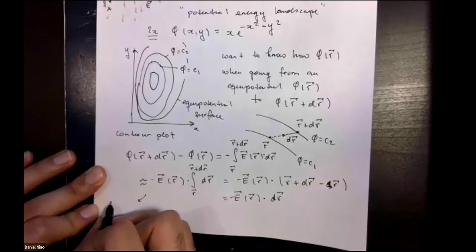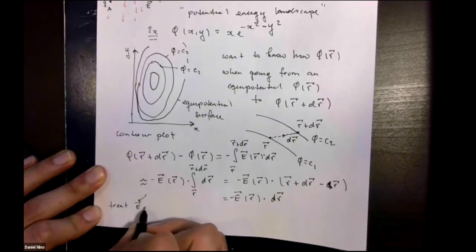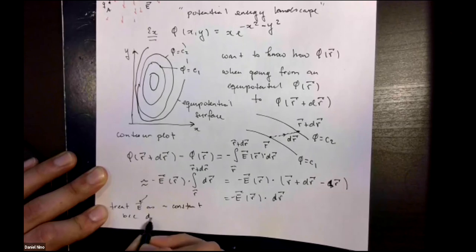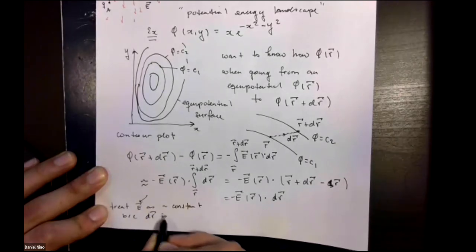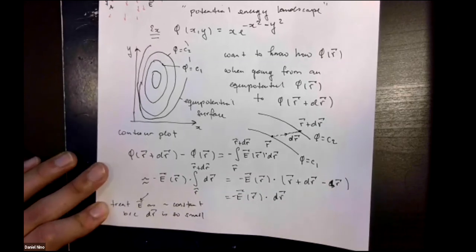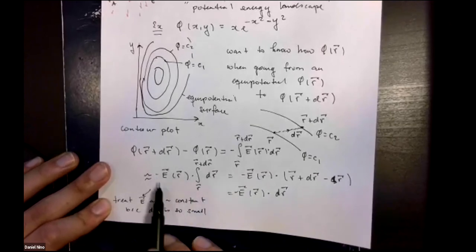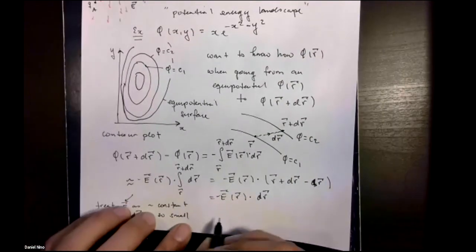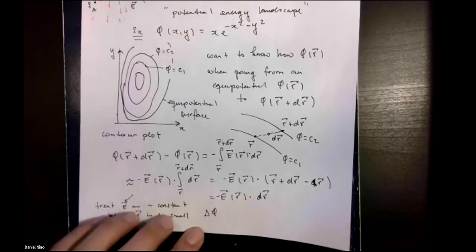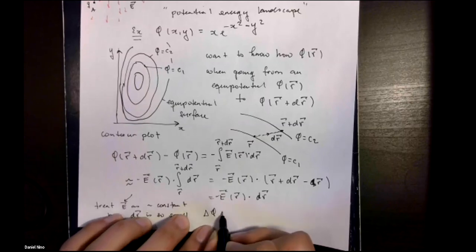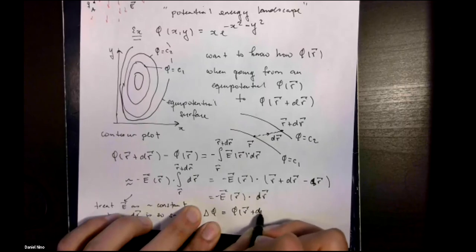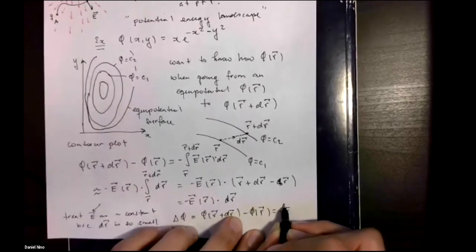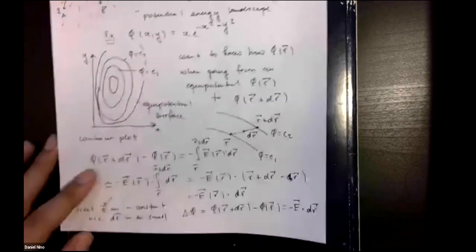So as a reminder, we treated E as approximately constant because our difference in path is so small. We're approximating E as not having changed appreciably over the range of integration. So what we're left with is our change in potential energy per unit charge, which was this difference, is equal to that.